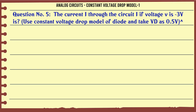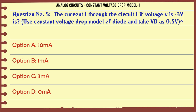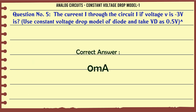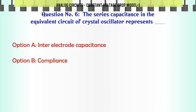The current I through the circuit if voltage V is 3V — use constant voltage drop model of diode and take Vd as 0.5V. Options: A) 10mA, B) 1mA, C) 3mA, D) 0mA. The correct answer is 0.5V. Next: The series capacitance in the equivalent circuit of crystal oscillator represents —